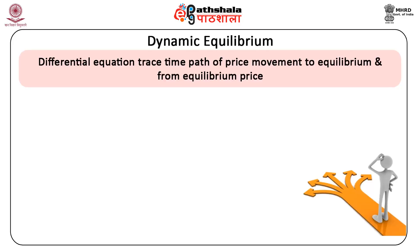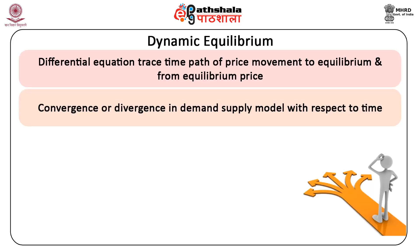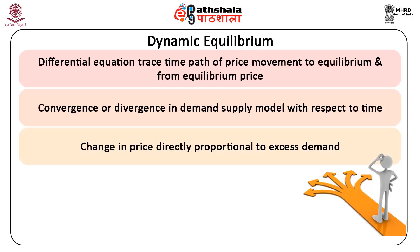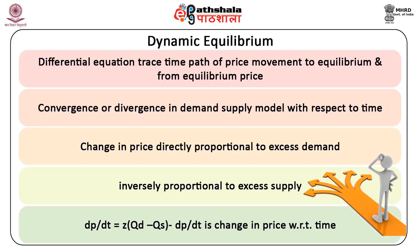Differential equations can be used to trace the time path of the price movement to the equilibrium and from the equilibrium price — i.e., convergence or divergence in the demand-supply model with respect to time. As we know, change in price is directly proportional to excess demand and inversely proportional to excess supply. This can be explained as follows: dp/dt = z(Qd − Qs).